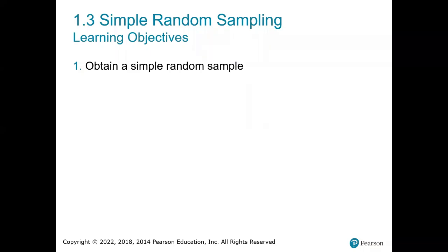Next up is section 1.3, where we are going to understand how to do simple random sampling. If you are going to be conducting a study, we have to get our individuals or participants to collect our data. In order to do that, we are going to take what is called a random sample.